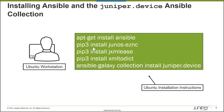Once Ansible is installed, I can use PIP3 to install Junos-EZNC — that's Junos PyEZ. A lot of the communication between an Ubuntu workstation and Junos managed devices uses XML, so there are two XML libraries required by this collection. And then finally, once these processes are complete, the Juniper.device Ansible Collection is available in Ansible Galaxy, so I can run the ansible-galaxy collection install Juniper.device command.